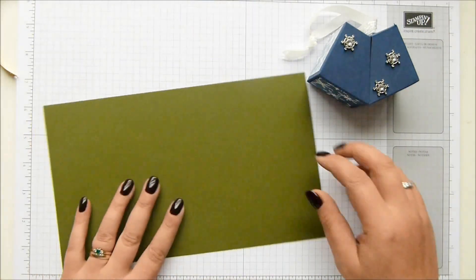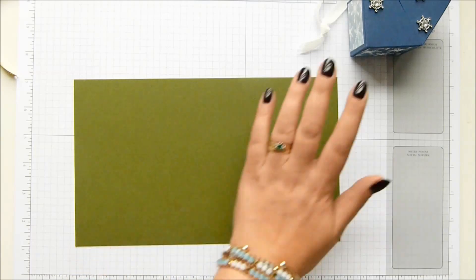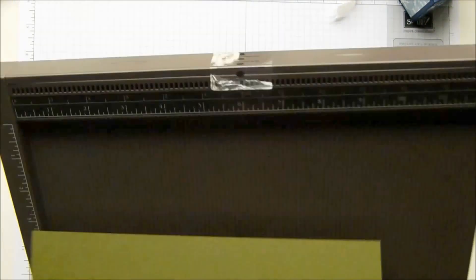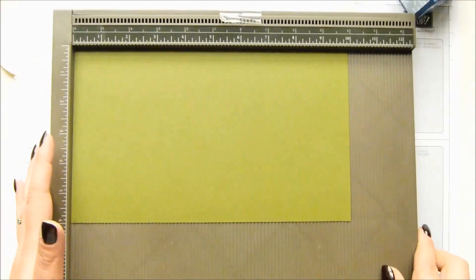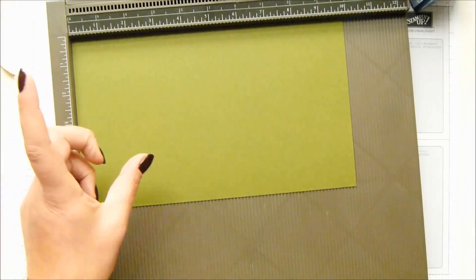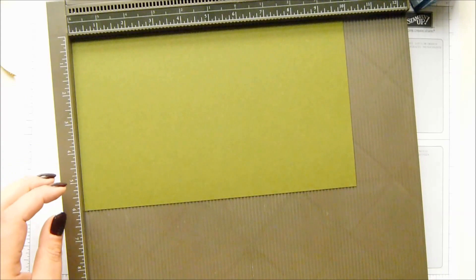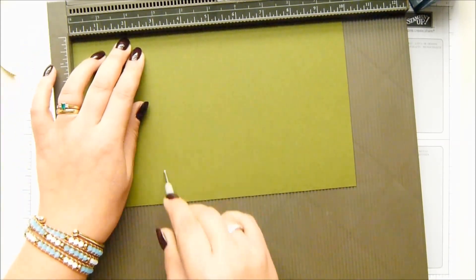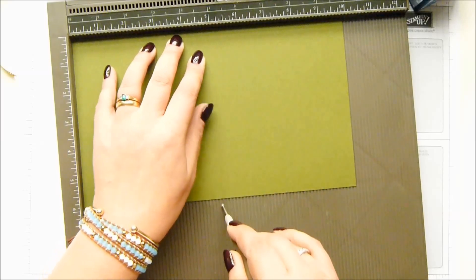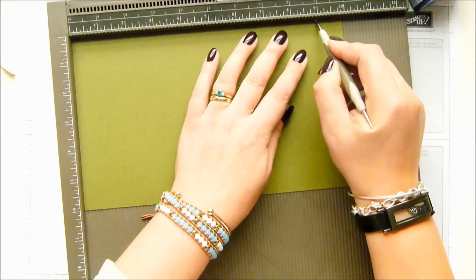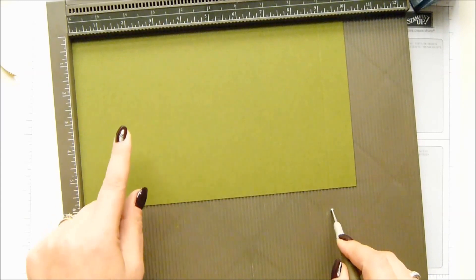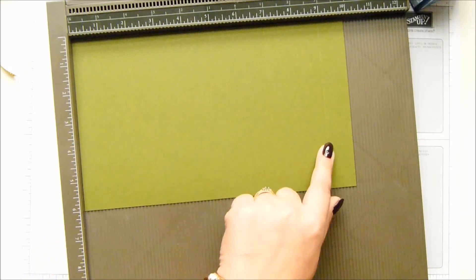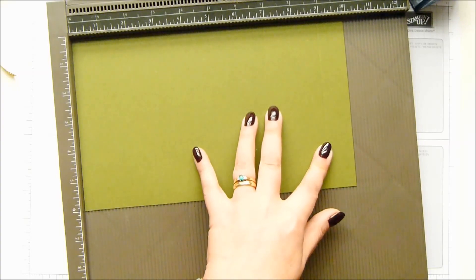This one is Mossy Meadow because I'm going to use the Home for Christmas paper and this measures 10 by 6 inches which is 25 by 15 centimeters, so a little bit different to the washi box. You score it at the 1, 3, 5, 7 and 9 inch mark which in centimeters is 2 and a half, 7 and a half, 12 and a half, 17 and a half and 22 and a half centimeters.